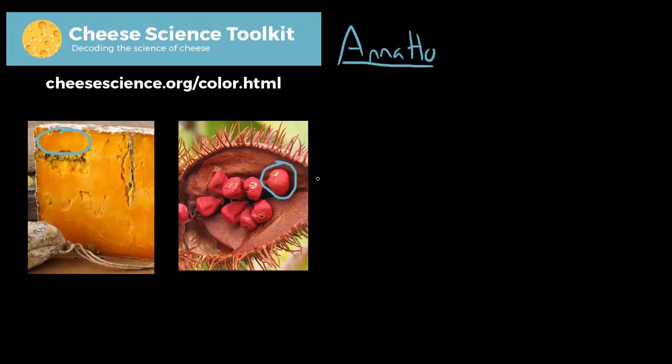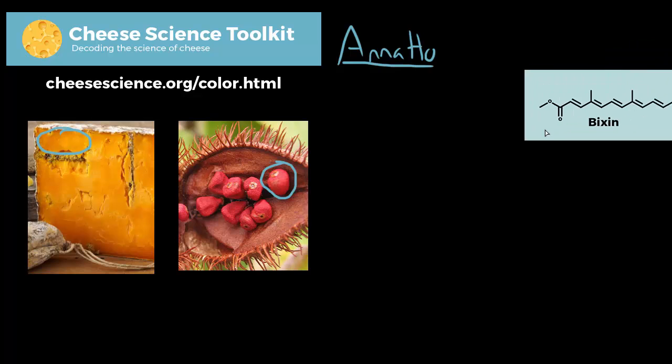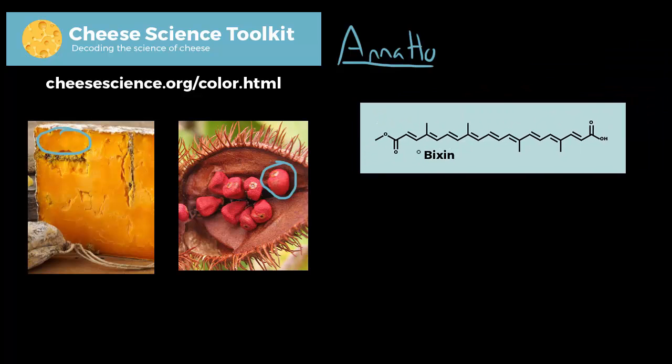Starting out, that main red color in annatto, that orange color they're after, is called bixin. Here's a structure of bixin. For those paying attention at home, you may remember that we talked about this alternating double bond structure: two bonds here, one bond here, two bonds here, one bond here, two bonds here. This every-other structure, also called conjugation, usually means it's going to have a color, and sure enough bixin does have a color. It's that orange we're used to seeing, and this is the compound directly from the seed.